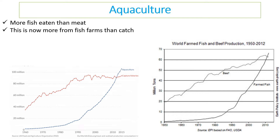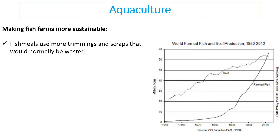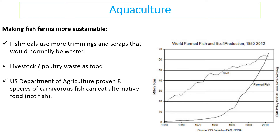We now have to use fish farms more than catch wild fish because the catch isn't working, and this needs to be made more sustainable. Fish meals — what they feed the fish — can use more trimmings and scraps that would normally be wasted. Fish are not picky eaters, so there are alternative ways of getting protein into them. Livestock and poultry waste can be used as food. The US Department of Agriculture has proven that eight species of carnivorous fish will eat other sources of protein that are not fish, so it doesn't have to be fish feeding fish.